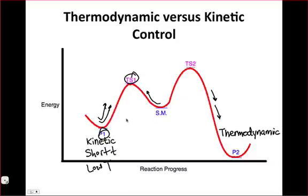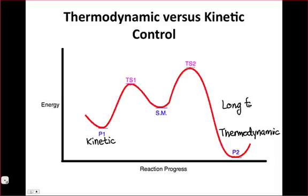In other words, we make the reverse reaction from P1 back to the starting material essentially negligible. To favor thermodynamic products, we do the opposite. So at long times, or at high temperatures, we favor the thermodynamic product.